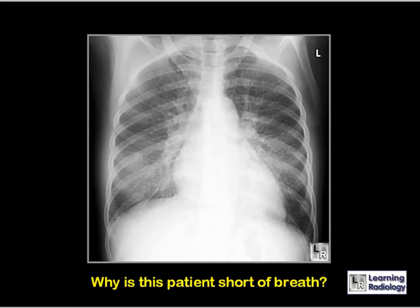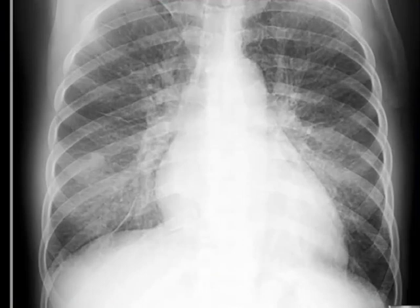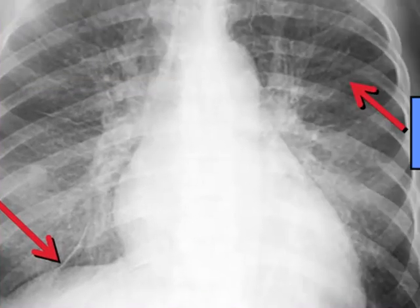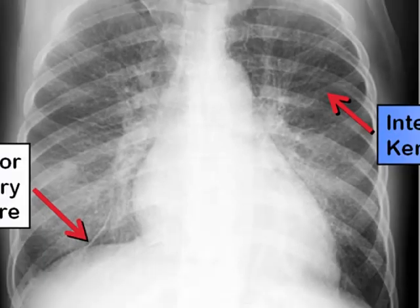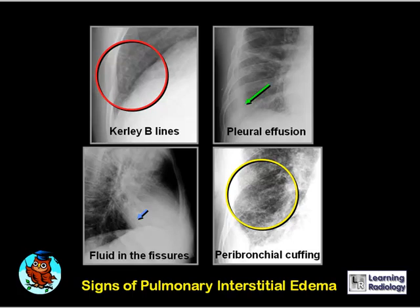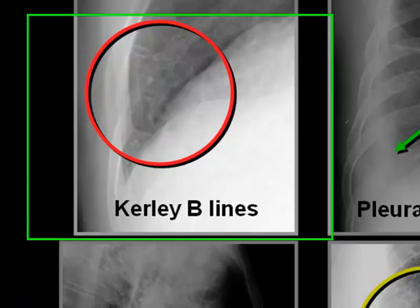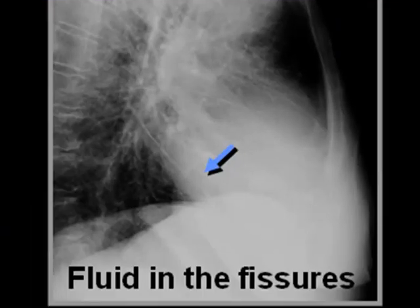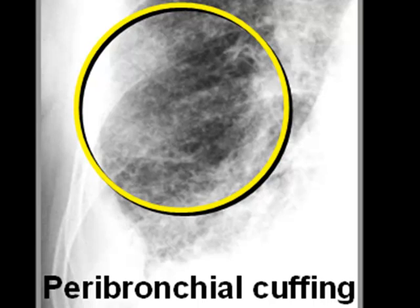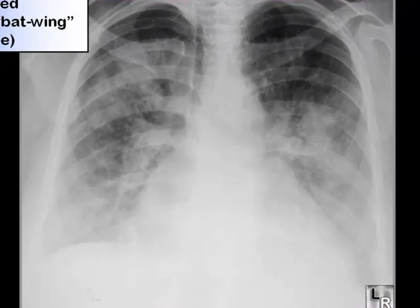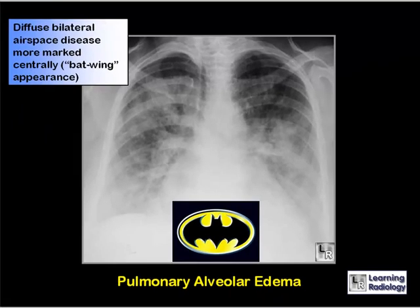Why is this patient short of breath? There is fluid in the fissure — in this case the inferior accessory fissure — and there is diffuse prominence of the pulmonary interstitial markings caused by intersecting curly lines. This patient is in pulmonary interstitial edema secondary to congestive heart failure. The four reliable signs of CHF on conventional radiography are curly B-lines, pleural effusions, fluid in the fissures, and peribronchial cuffing. There are also diffuse bilateral airspace densities in a perihilar distribution sparing the outer lung — the bat wing or angel wing appearance of pulmonary alveolar edema.